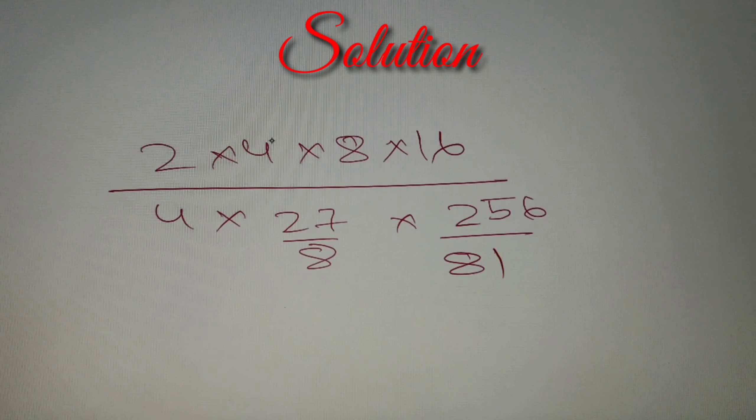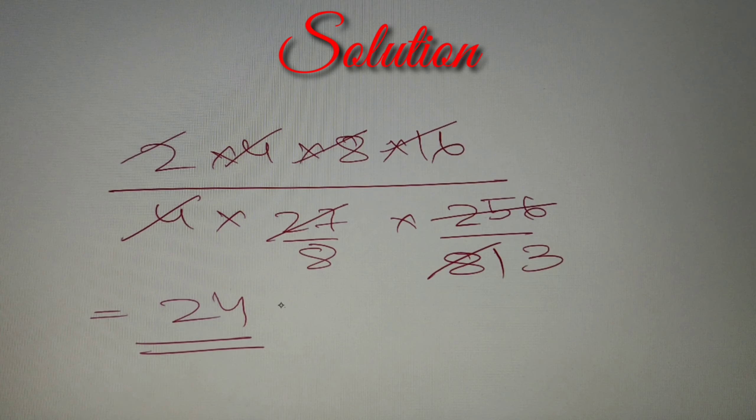According to our last step, we have all the numerical values and now we just have to cancel them out. 4 and 4 will get cancelled. 27 and 81 will get cancelled and we'll get 3. Now 16 × 8 × 2 equals 256. This 256 and all the numbers in the numerator will get cancelled out and we'll get 1/8 × 3, which is 1/24. So the final answer is 24.